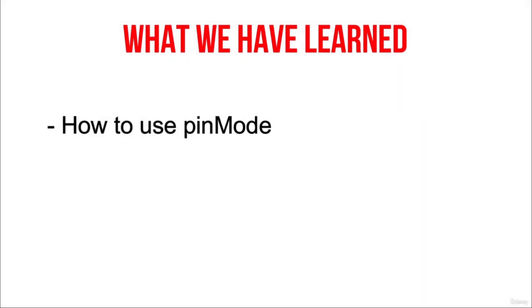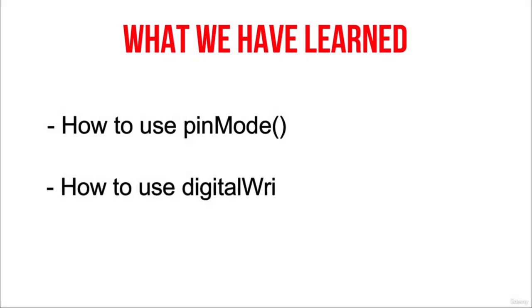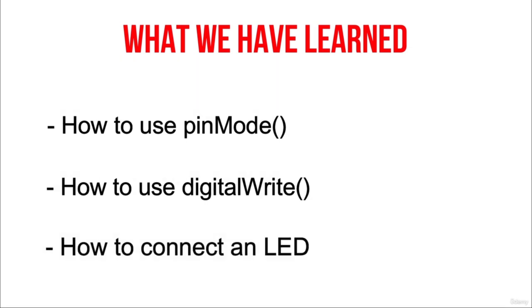We can also slightly modify our code to use a different digital pin, for example pin number 5. To make this modification, just put 5 instead of 13 inside the pinMode and digitalWrite functions, and move the jumper wire from pin 13 to pin 5. In this exercise, we have seen how to configure a digital pin using the pinMode function, how to use digitalWrite to blink an LED, and how to connect an LED to the Arduino using a breadboard, a resistor, and jumper wires.